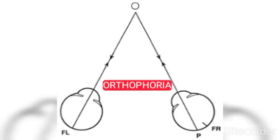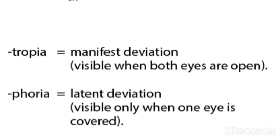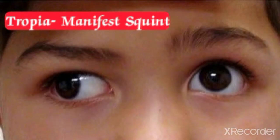First of all, we have the term orthophoria. Orthophoria means it is an ideal condition where the visual axes of both eyes meet at the same point of fixation. The normal condition where there is no squint is called orthophoria. Now, we have two terms: tropia and phoria. Tropia is the true manifest squint, the squint we can see.